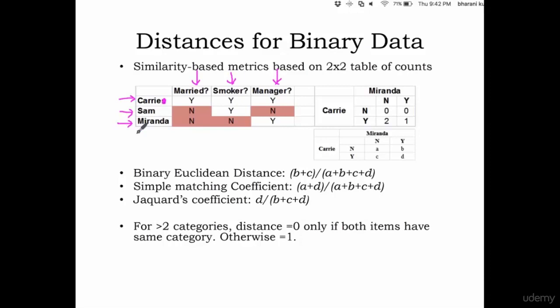Now what you do is say you want to calculate the distance between Carrie and Miranda, then you put this dummy variable and try to calculate. In how many places do you have Carrie No and Miranda No? In zero places, right? Here it is yes and no, yes and no, yes and yes. You do not have a no and no. So it's zero.